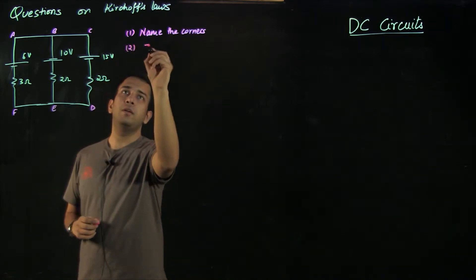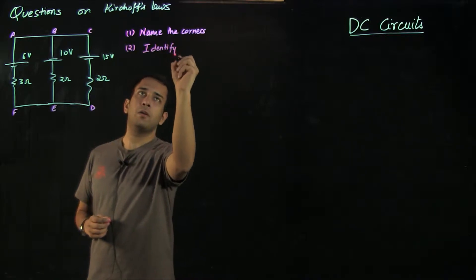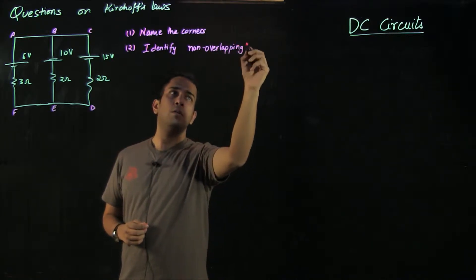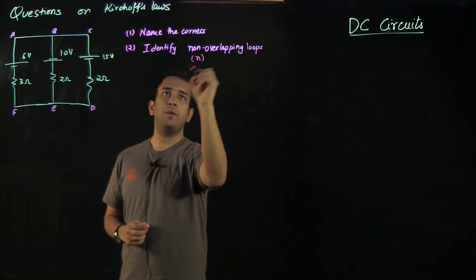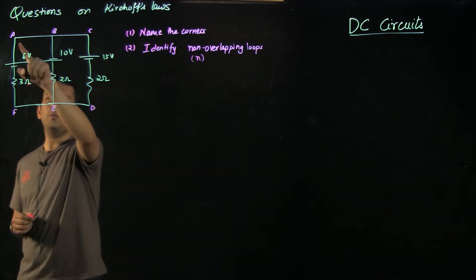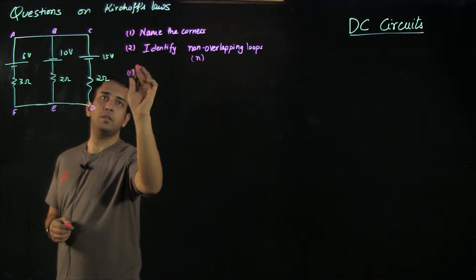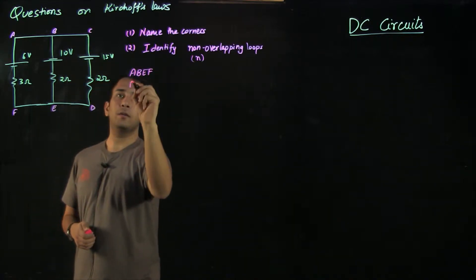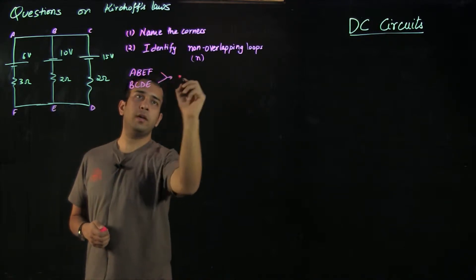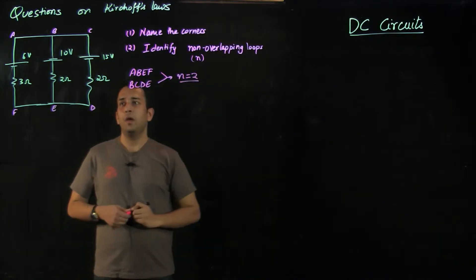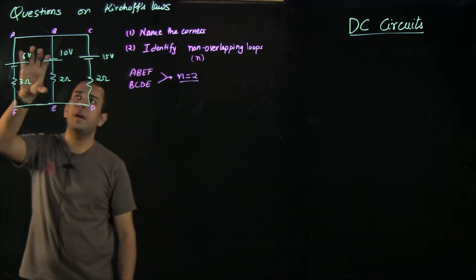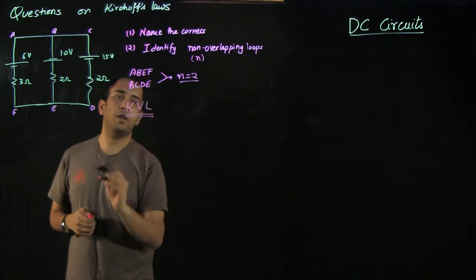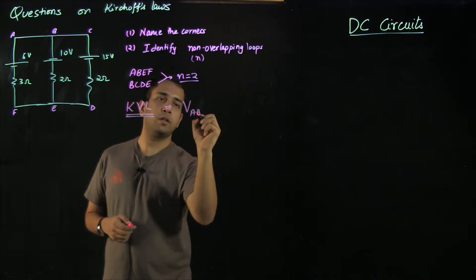The second thing is to identify the non-overlapping loops. We can clearly see that loop A, B, E, F is one such loop and the second loop is B, C, D, E. So the number of non-overlapping loops is 2. This helps identify that we can get two equations from these two loops of this circuit through KVL.